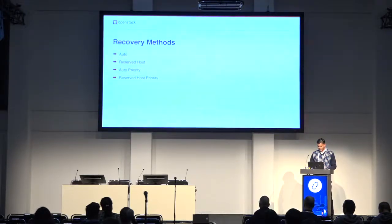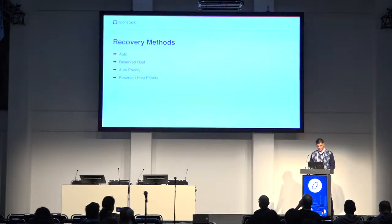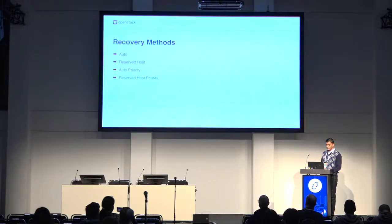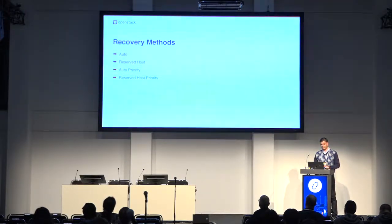We are going to emit a lot of useful information to help operators understand what is happening. Before I explain that, let me quickly explain what kind of recovery methods we support. When you create a failure segment, you can specify four different types of recovery methods. The first one is 'auto' — in this case, Nova will decide on which compute host the instances should be evacuated. The second one is 'reserved host' — when you create a failure segment, you can add all the compute hosts that will be part of it.